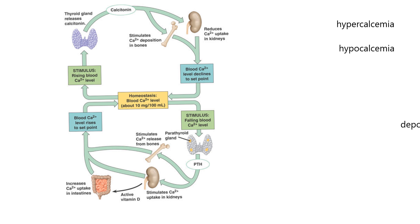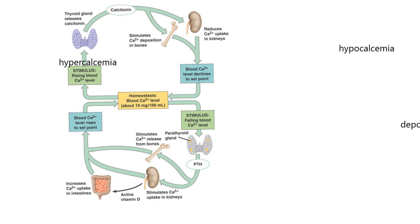Now I'm going to explain this next diagram, which does a better job of telling you what parathyroid hormone does. If there are rising blood levels of calcium, you could call that hypercalcemia, and calcitonin tries to lower blood calcium. If blood calcium is low, that's hypocalcemia — hypo means low, emia means blood, and calc refers to calcium. So low calcium in the blood versus high calcium in the blood.